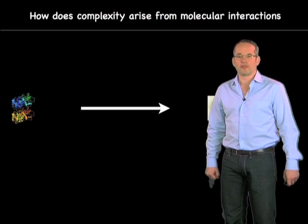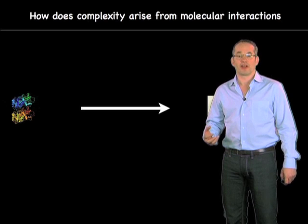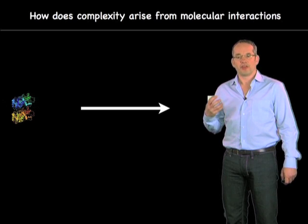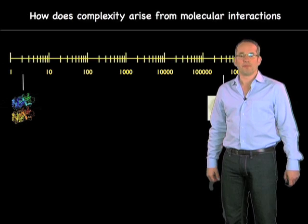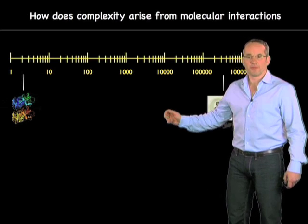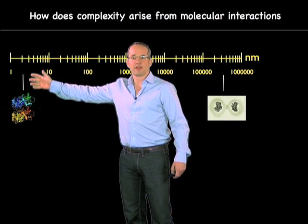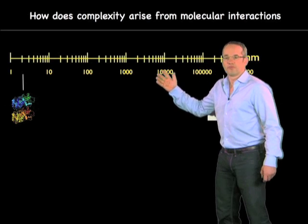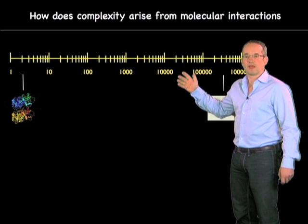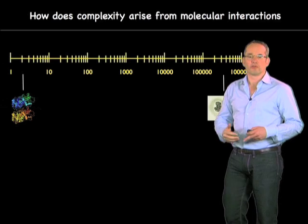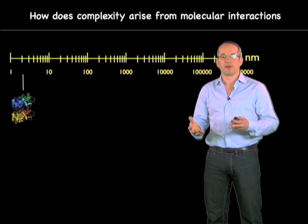One of the key questions in biology that we're all interested in is the following: how does complexity arise from molecular interactions? The things we're interested in, such as cells, are often five or six orders of magnitude bigger than the molecules that make them up. So, what are the rules by which these molecules can interact to create these very complex structures, which are so much bigger than they are themselves?